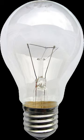An incandescent light bulb, incandescent lamp, or incandescent light globe is an electric light with a wire filament heated to such a high temperature that it glows with visible light. The filament is protected from oxidation with a glass or fused quartz bulb that is filled with inert gas or a vacuum.